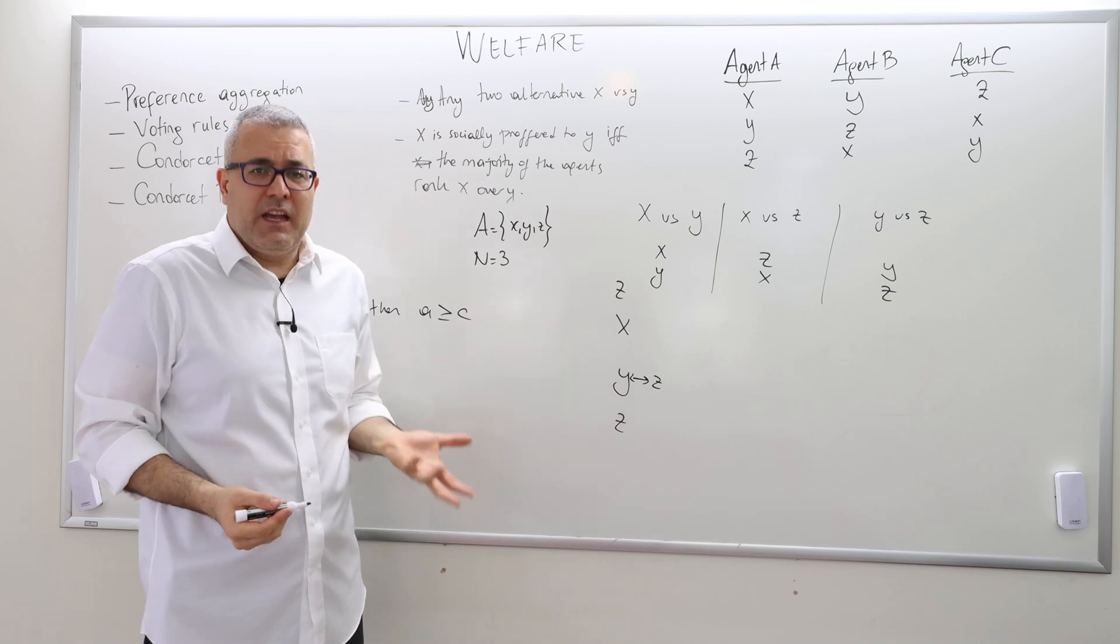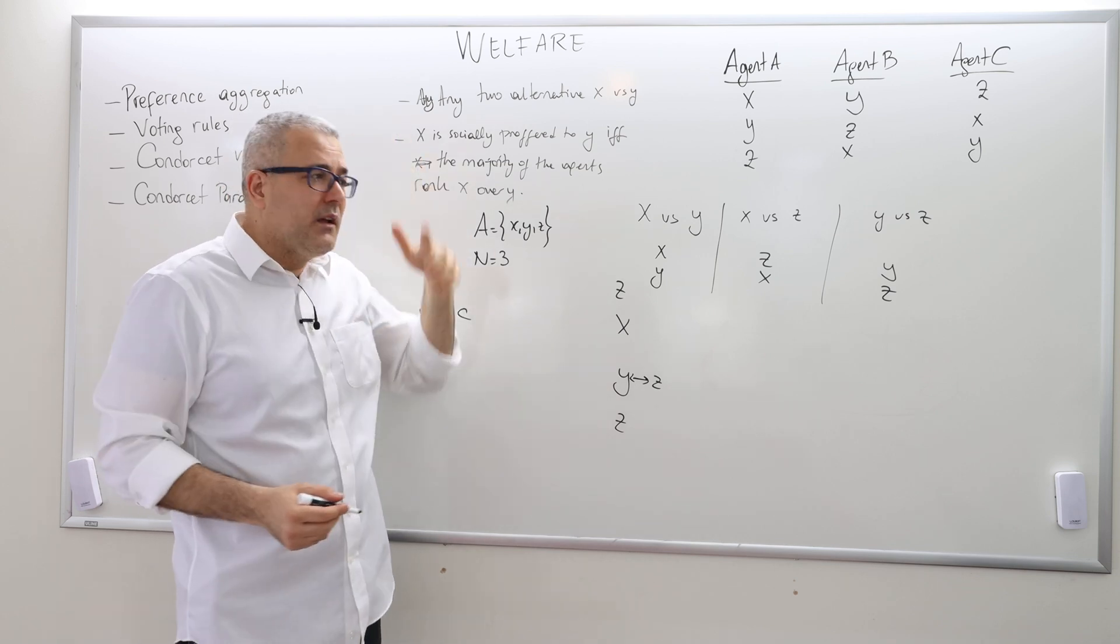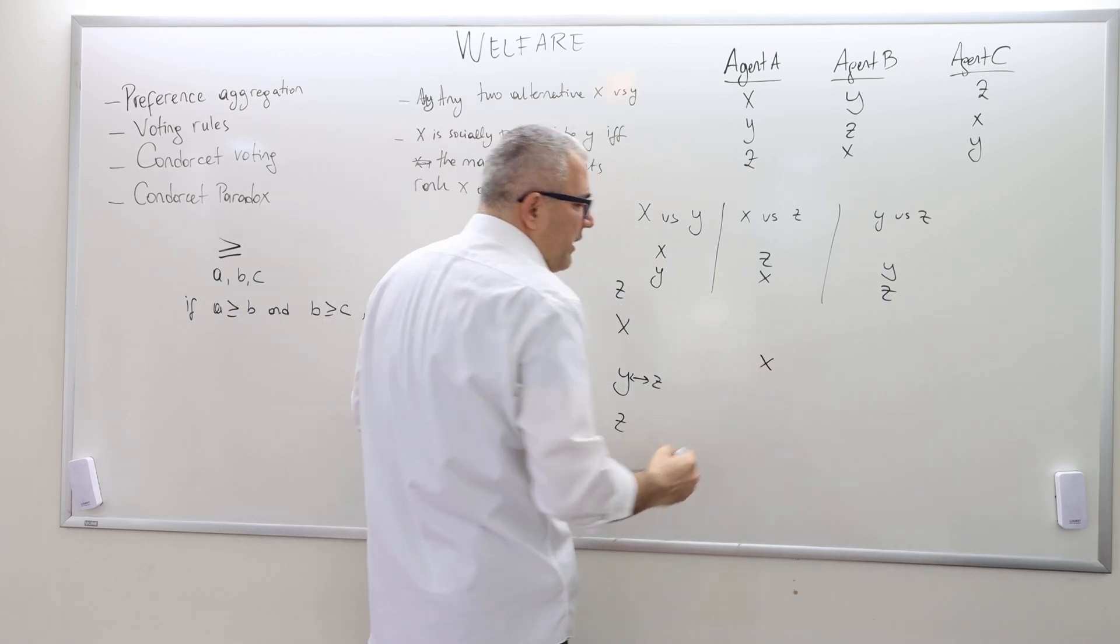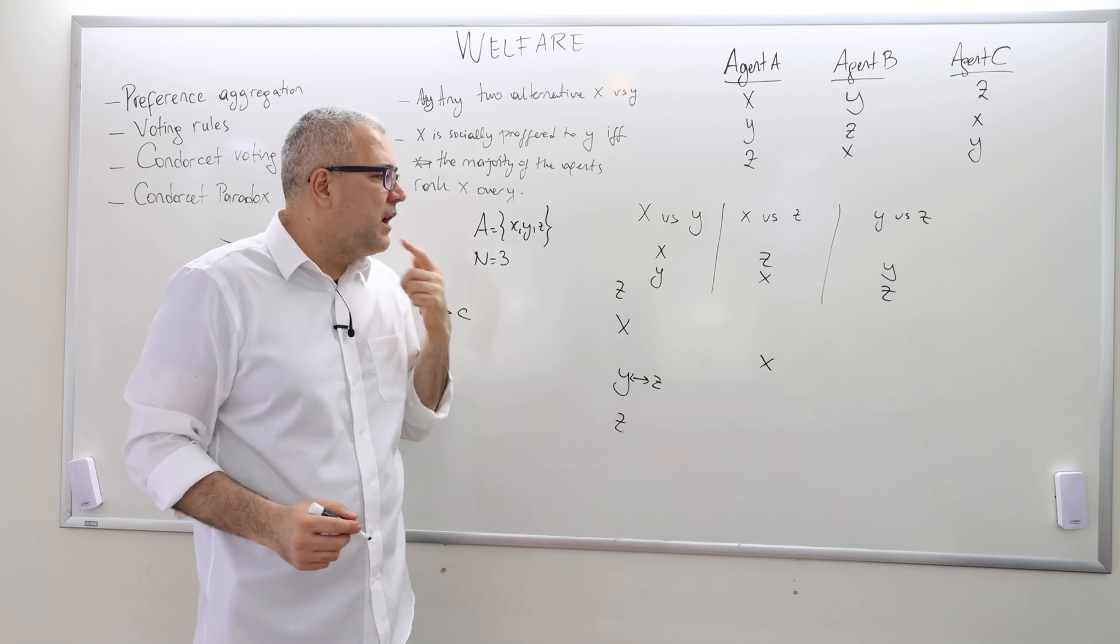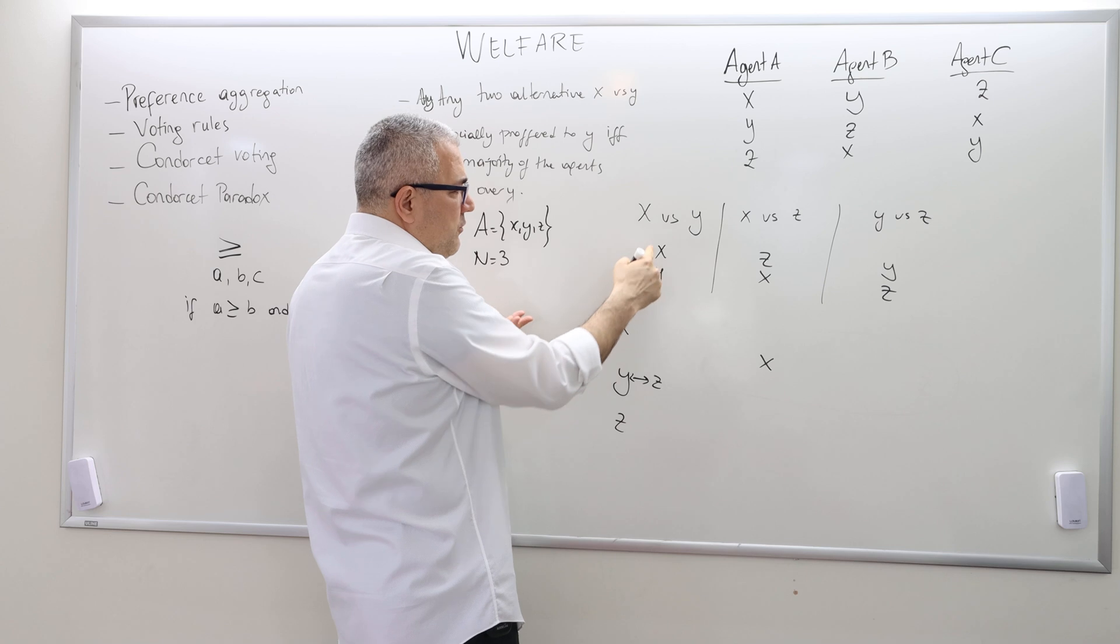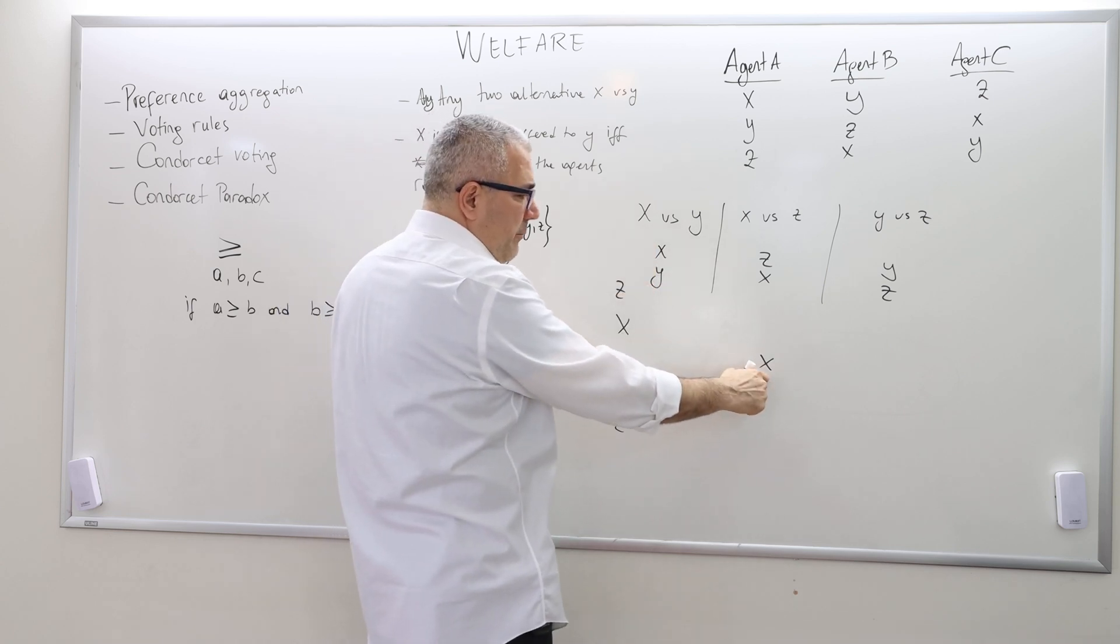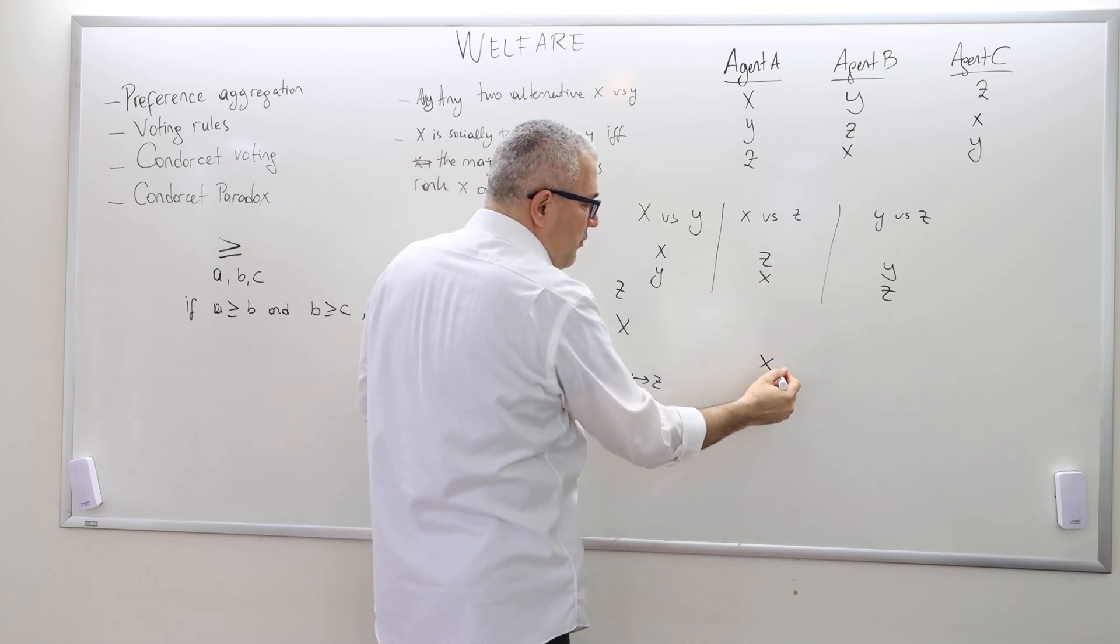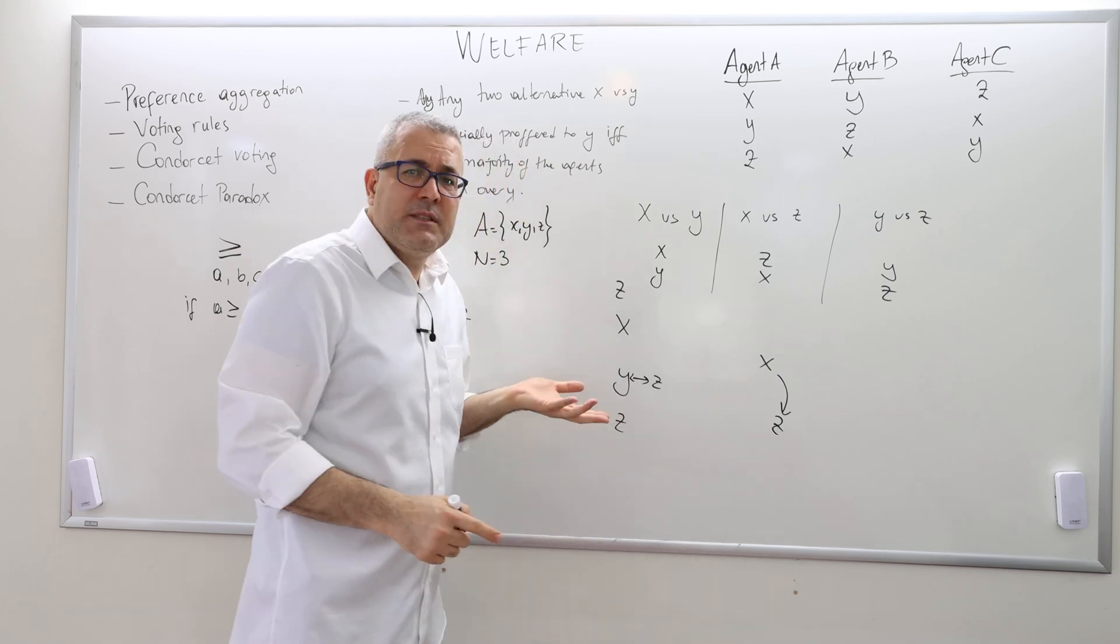However, here we don't have that transitivity. So that's a problem. Why is that so? Well, here is the reason. So let's suppose we give these guys alternative X. We say, this is the socially best alternative. Actually, it's not. Why? Because when it comes to X versus Y, yes, X is better than Y, but it really isn't socially best because Z is socially better than X. Therefore, let's give them Z.